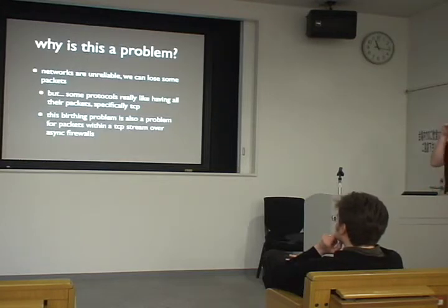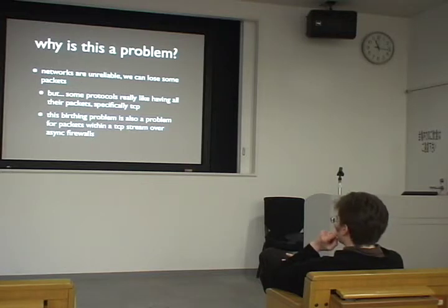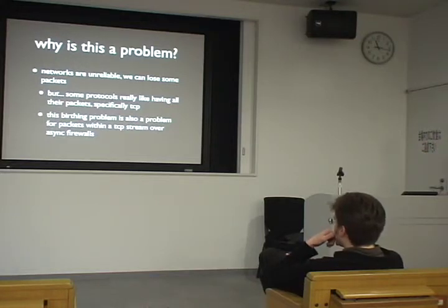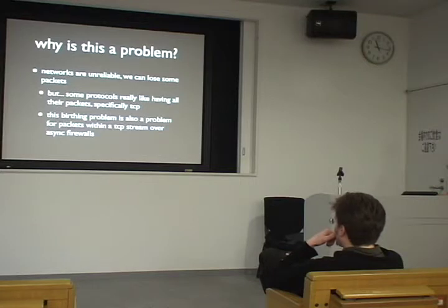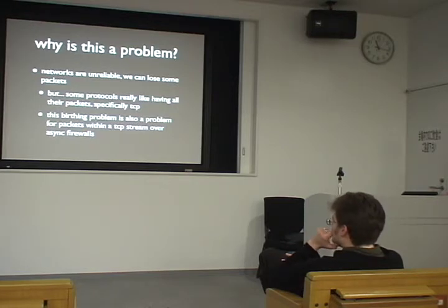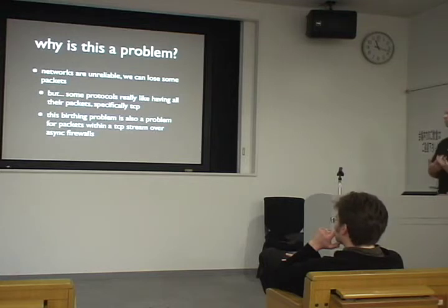Why is this a problem? Because in real networks you do lose packets, and some protocols really like having all of their packets — every single one. Also for TCP in particular, as you move the windows forward, because of the checks PF does on TCP windows, you have to tell the peer about it so it will allow the replies through. You have to tell it at roughly similar time scales to what the window moves forward, because of how strict our checks are. Making the fuzz bigger would compromise firewall security, so one requirement for this project is that we don't compromise the restrictiveness of PF.